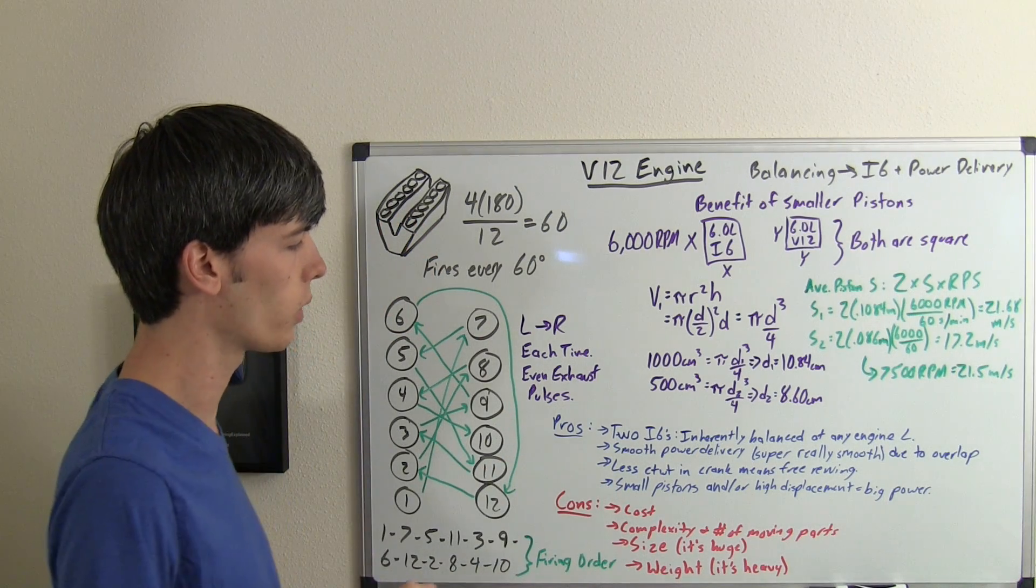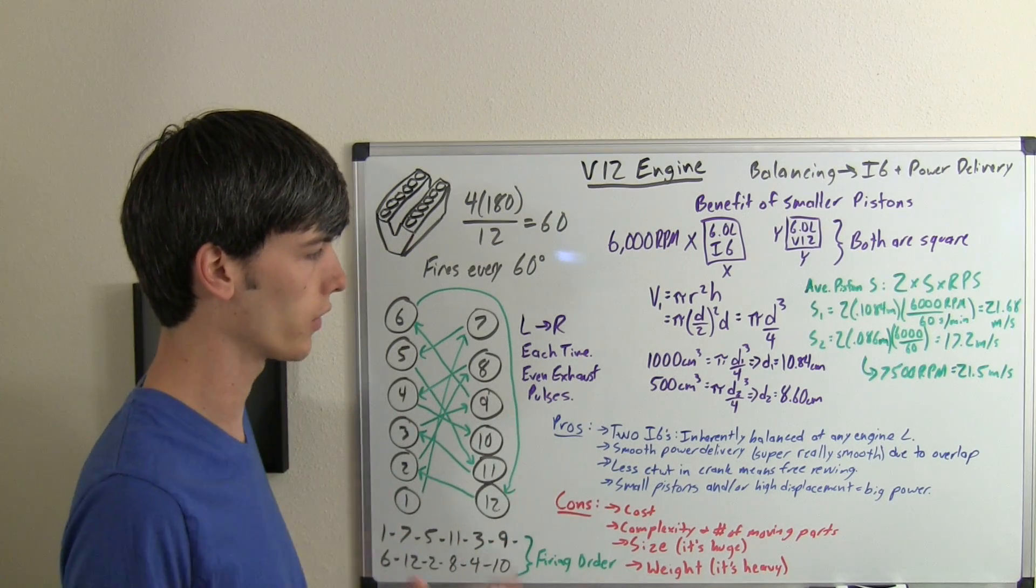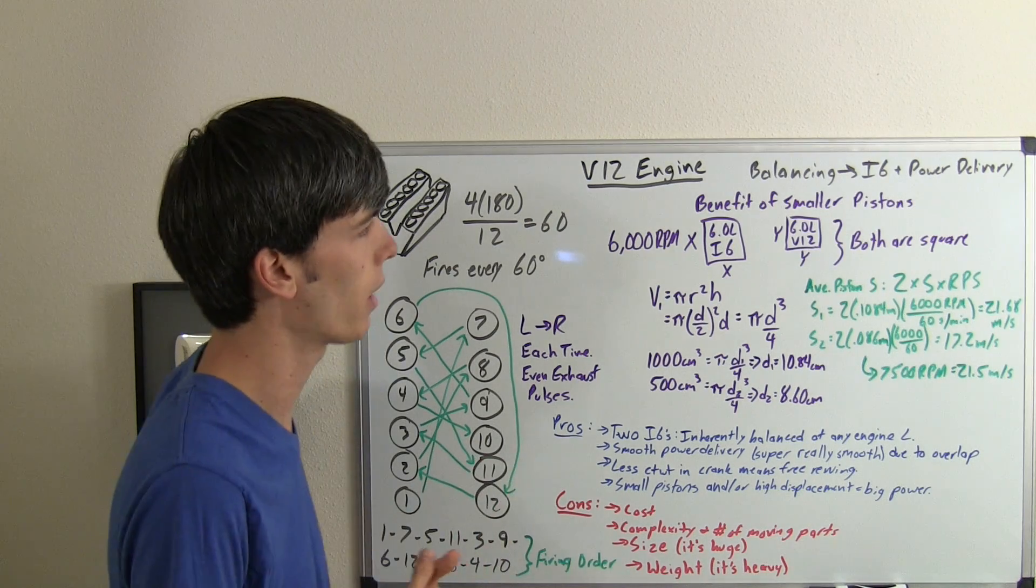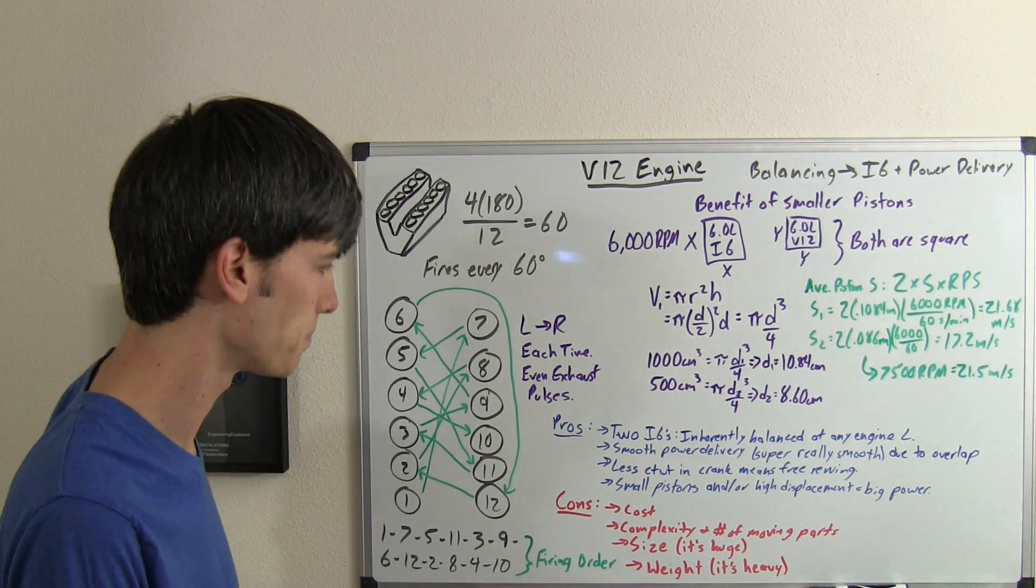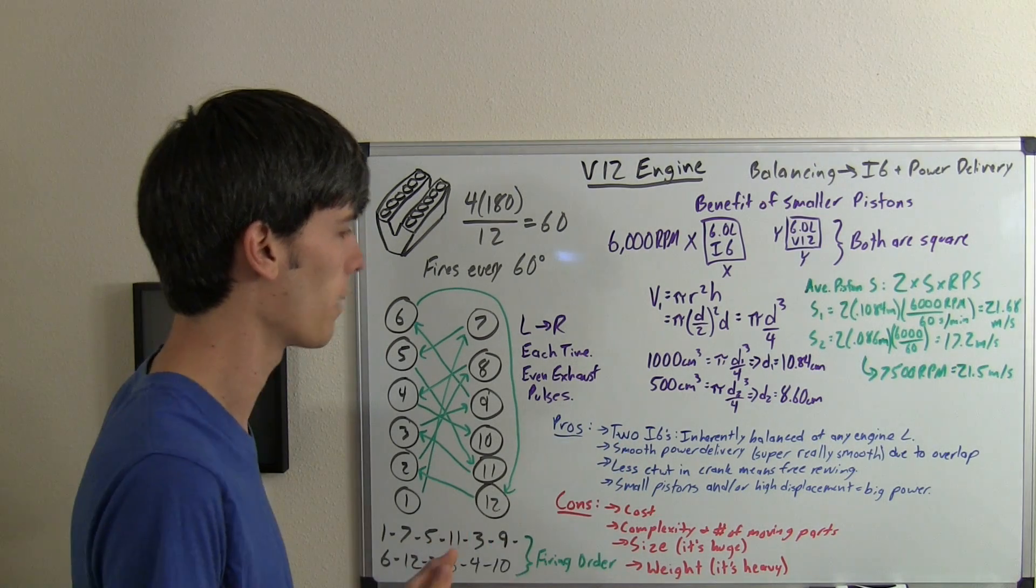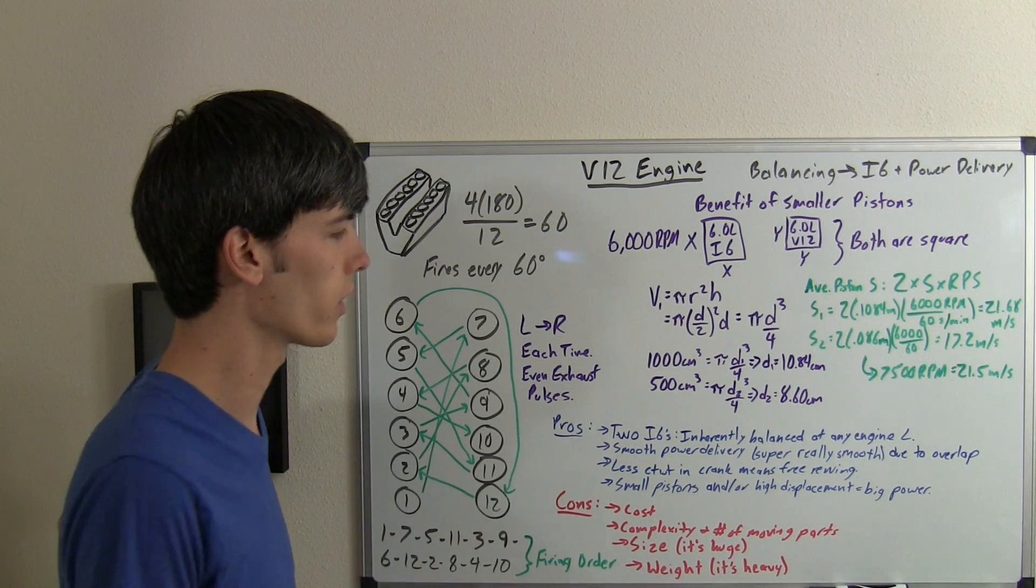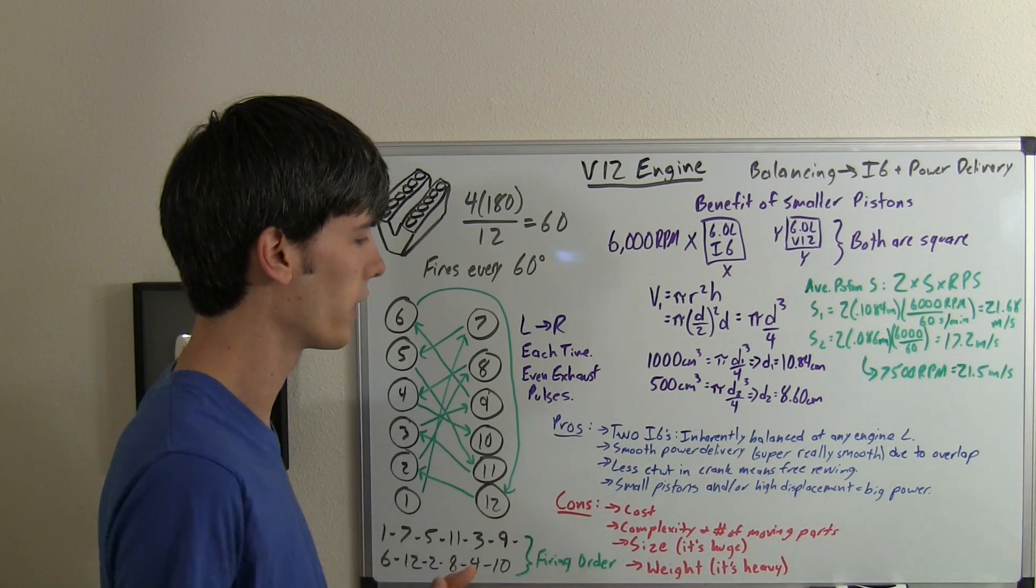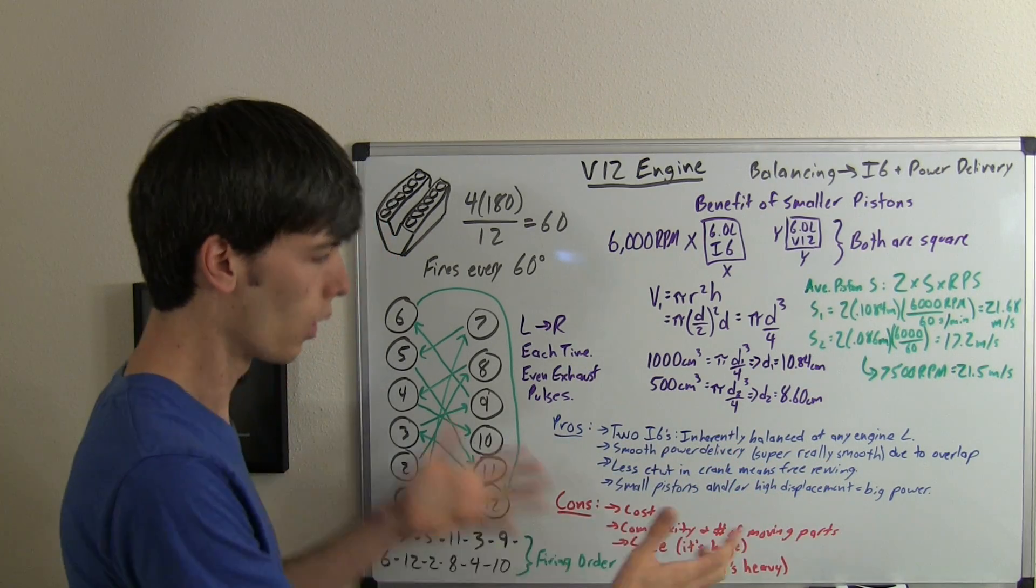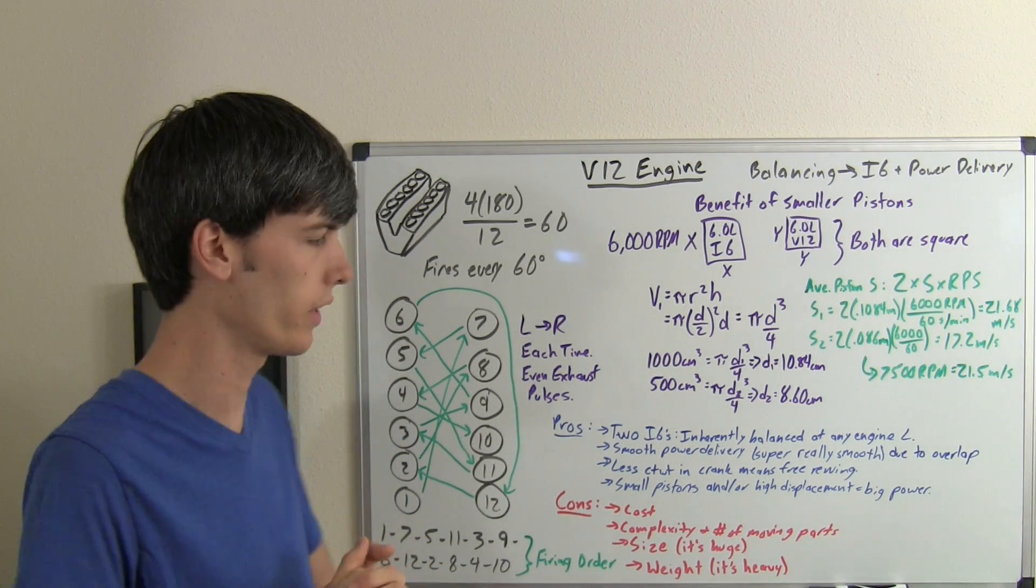So, advantages of a V12 engine. Well, it's two inline six cylinders mated to a common crank. So it's inherently balanced. And because you've got more power strokes, it's going to be smoother power delivery than an inline six cylinder. So that's the next one, smooth power delivery. You've got a ton of overlap between the pistons, so plenty of smoothness in the engine. Less counterweight on the crankshaft means it's freer revving. That's just because it's balanced. And also you can use small pistons or have high displacement or a combination of the two and create big power with these massive V12 engines.